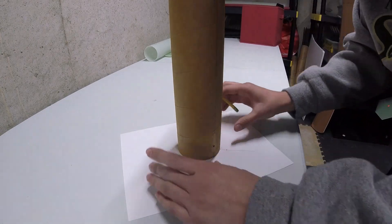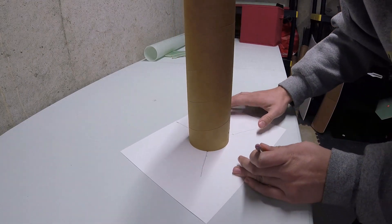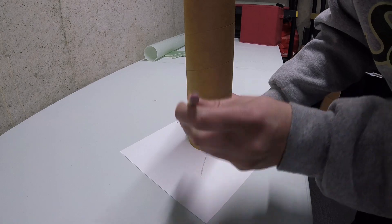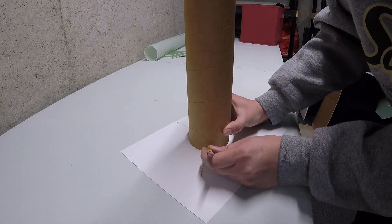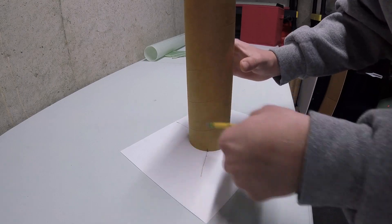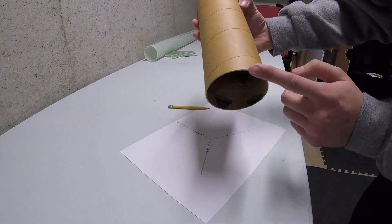Then, as you see right here, you just take your pencil and mark where the fin would go. You do that on all three sides, and you end up with tick marks on the bottom with 120-degree spacing.